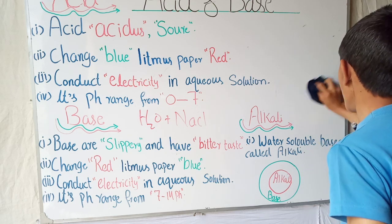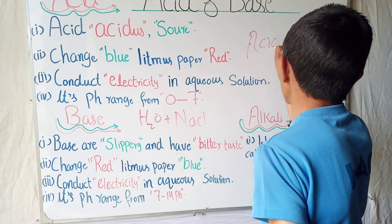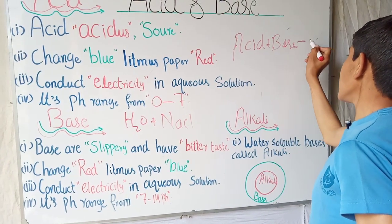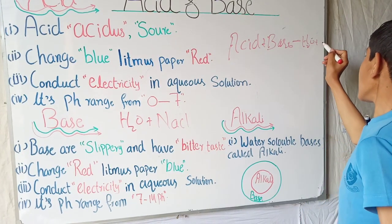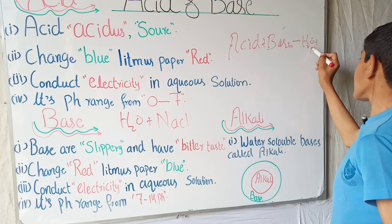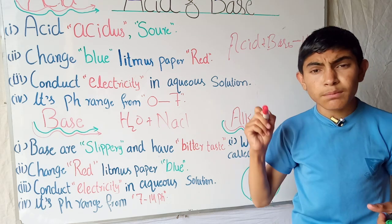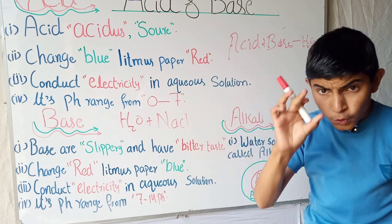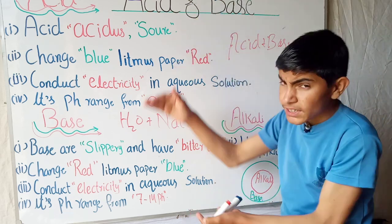Table salt is also neutral. When we add acid plus base in a neutralization reaction, they give us H2O plus salt.